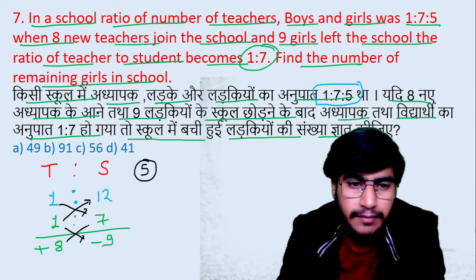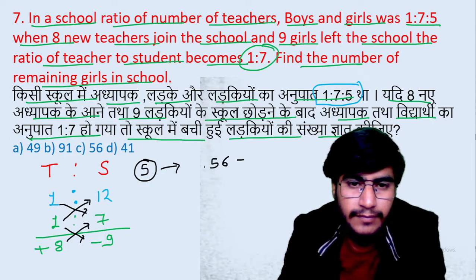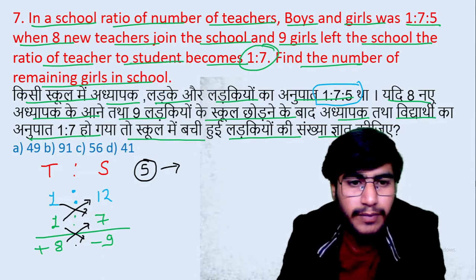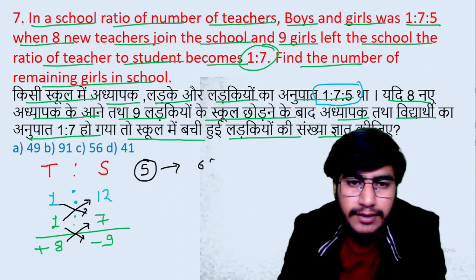Idhar se karte hain multiply. 8 multiply 7 equals 56. Kya jaayega? 56. Aur ye minus. Ye minus ka 56 aaya. Aur minus, minus — ye kya ho jaayenge? Dono jud jaayenge. Mod le rahe hain — dono plus ho jaayenge. Matlab dono ko jodna hoga. To ye kya ho jaayega? 56 plus 9 kya ho jaayega? 65.